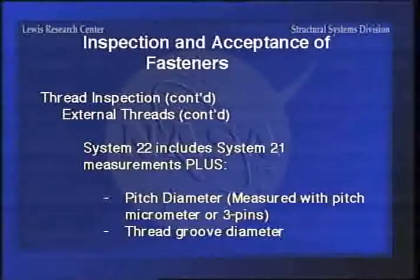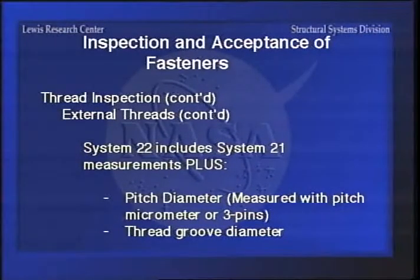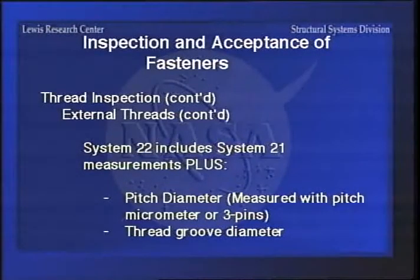System 22 includes the system 21 measurements plus pitch diameter. You can measure it with a pitch micrometer, which has a grooved head on one end that fits over a thread, then a pin on the other one that fits in a thread. You can span this across the OD of the threaded area and get a reading which gives you the actual pitch diameter, and then look on a table to see whether it's within the tolerances you want.